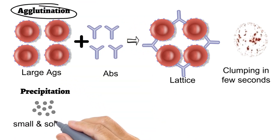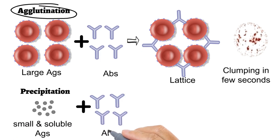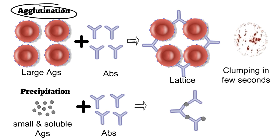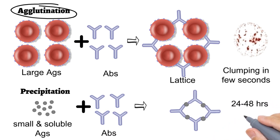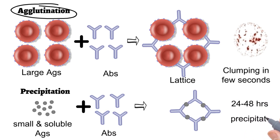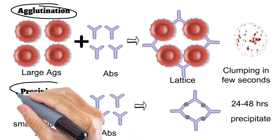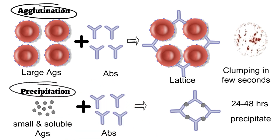But if the large particulate antigen is replaced by a small and soluble antigen, the reaction doesn't develop immediately. It requires at least 24 to 48 hours for the reaction to become visible in the form of a precipitate. Such a reaction is called a precipitation reaction.